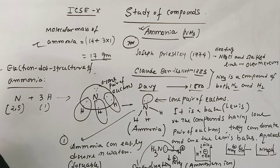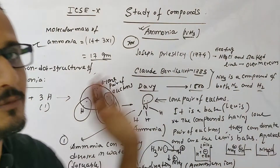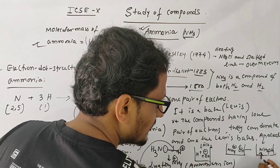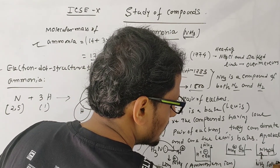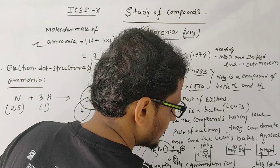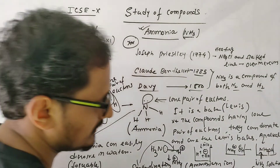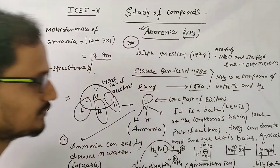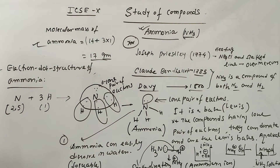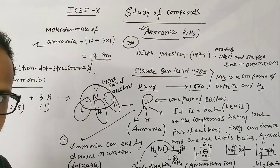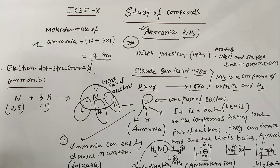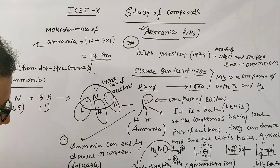So ammonia acts as a base because it forms ammonium hydroxide, which is an alkali, and ammonia will show all those properties shown by bases. Another important property of ammonia is that it has a pungent smell.